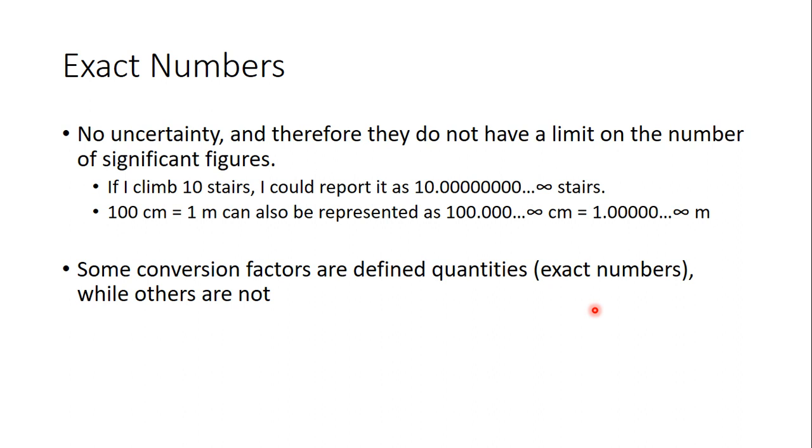Now, what if you're dealing with exact numbers? An exact number has no uncertainty to it. For example, I climbed 10 stairs. I could report that number as 10.0000, and so on and so forth, because there's no uncertainty in stairs. Or certain conversion factors, like 100 centimeters to 1 meter, there is no uncertainty to that number. 100 centimeters always equals 1 meter, so you can put as many zeros as you want. So if there's no uncertainty in the number, then you don't have to worry about sig figs.